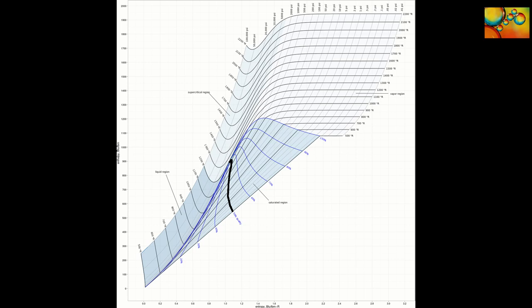Quality is defined as the ratio of the mass of the system in the vapor phase to the total mass. This slide highlights a line with 50% quality, meaning that half of the mass of the system is in the vapor phase.